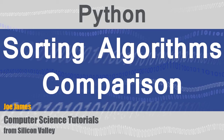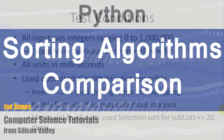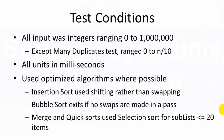Hi, I'm Joe James, and in this video I'm going to present the results of the benchmarks I ran on six different sorting algorithms in Python. For some of the test conditions, all input was in integers ranging from 0 to 1 million, with the exception of the many duplicates test, in which the integers ranged from 0 to n over 10. All units are in milliseconds, and I used optimized algorithms where possible.